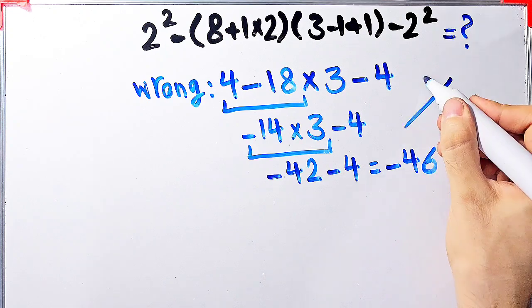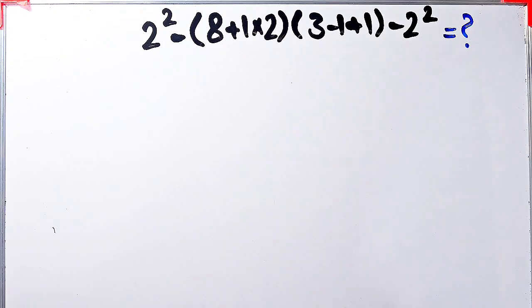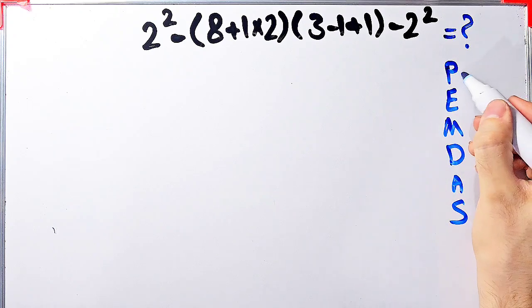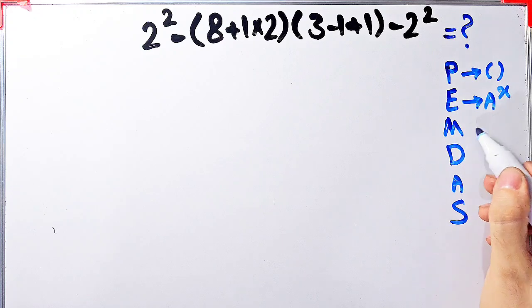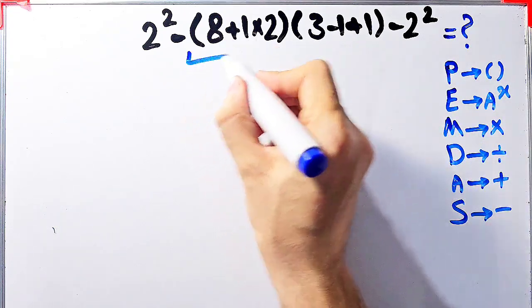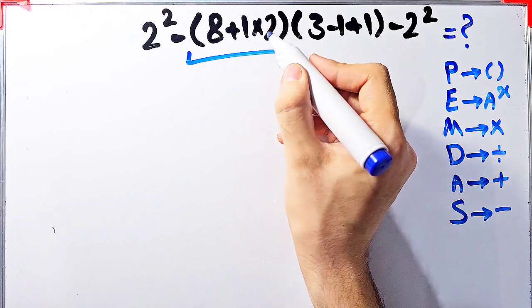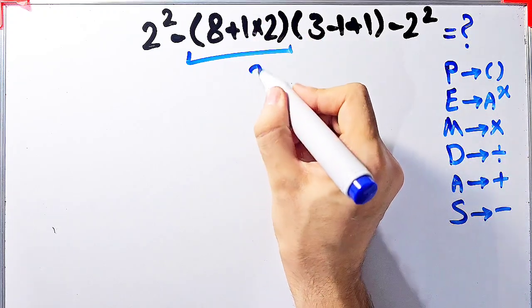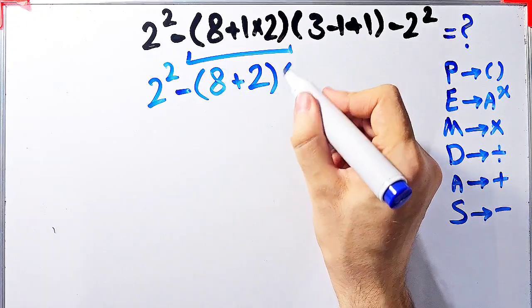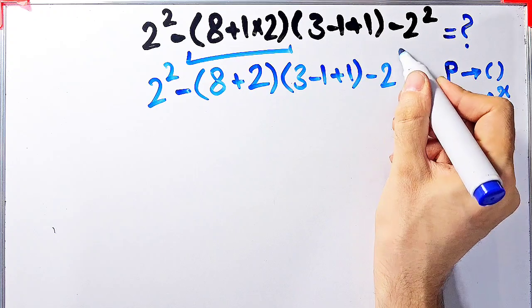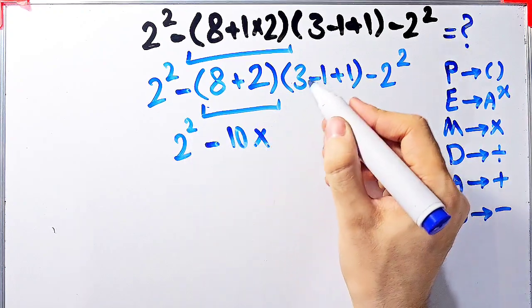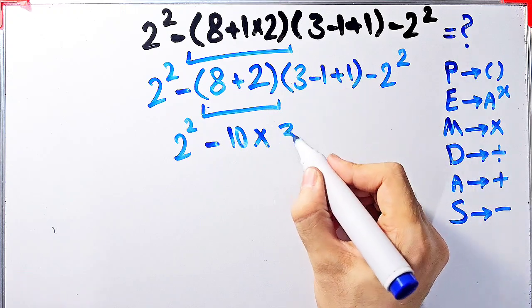Let's solve this question step by step. We need to follow the PEMDAS rule. If you don't pay attention to the PEMDAS rule, you get the wrong answer. P stands for parentheses, E for exponent, M for multiplication, D for division, A for addition, and S for subtraction. According to this rule, first we simplify the parentheses. Inside the first parenthesis, we have addition and multiplication. We do the multiplication first: 1 times 2 equals 2. Now we have 8 plus 2 inside the parenthesis. So the expression becomes 2 to the power of 2 minus (8 plus 2), then times (3 minus 1 plus 1), then minus 2 to the power of 2. Simplifying: 8 plus 2 equals 10, and 3 minus 1 plus 1 equals 3.